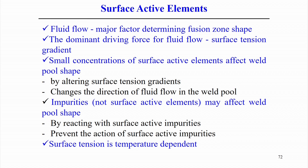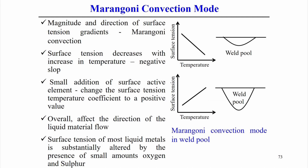Surface tension is always a function of temperature, so we analyze it from two points of view: concentration dependence and temperature dependence. The magnitude and direction of the surface tension gradient influence the material flow within the weld pool. This material flow within the weld pool is called Marangoni convection.